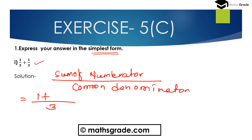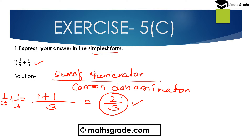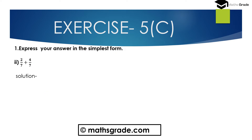Add the numerators: 1 plus 1 is 2, divided by 3. So 1 divided by 3 plus 1 divided by 3 is 2 divided by 3. When we add two like fractions, just add the numerators divided by the common denominator.